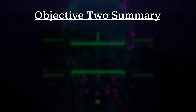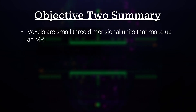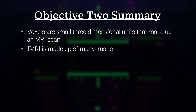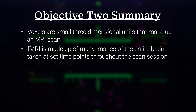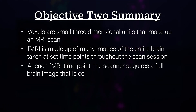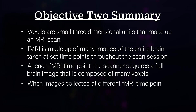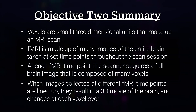In this section, we learned that voxels are small three-dimensional units that make up an MRI scan. fMRI is made up of many images of the entire brain taken at set time points throughout the scan session. At each fMRI time point, the scanner acquires a full brain image composed of many voxels. When images collected at different fMRI time points are lined up, they result in a 3D movie of the brain, and changes at each voxel over time can be evaluated.